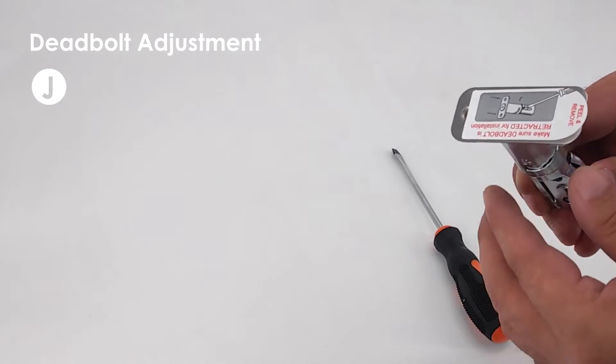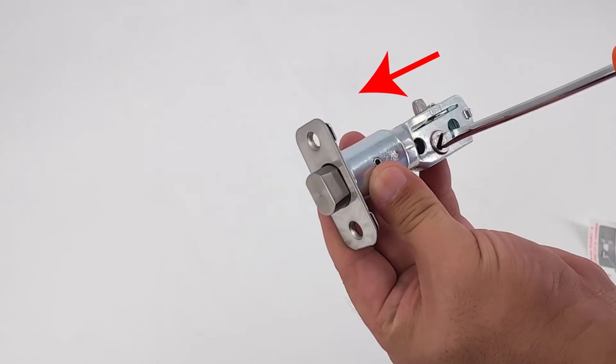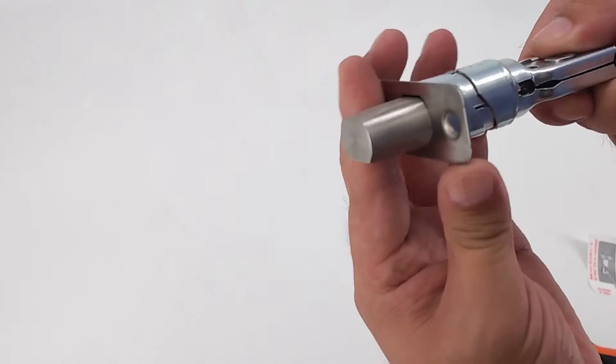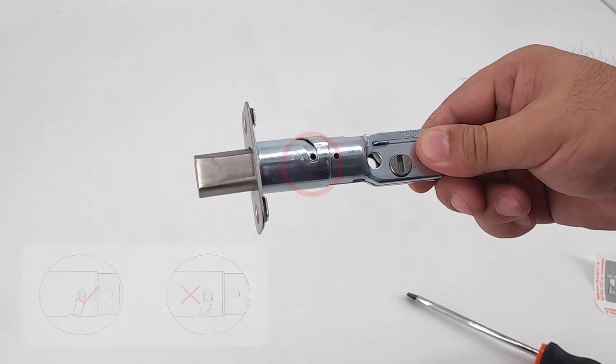Adjust deadbolt J. Remove the lock sticker. Use a screwdriver to extend the deadbolt. Hold the metal plate and twist the deadbolt body clockwise till it snaps to 2 and 3/8.